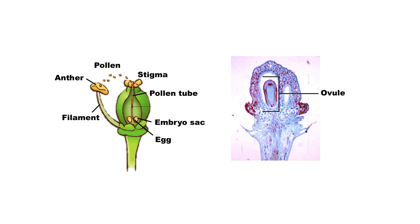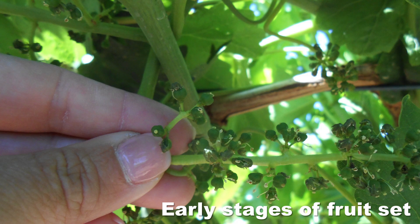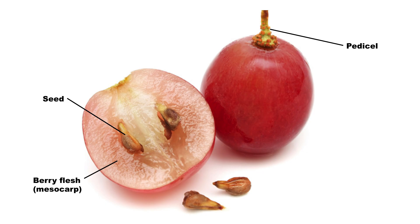During flowering, pollen grains from the anthers adhere to the sticky top of the stigma. Under the right conditions the pollen grains germinate and a pollen tube grows and penetrates the ovule. This egg is fertilised to form an embryo. In seeded varieties, fruit set occurs after successful pollination and fertilisation, and the ovule with its tiny enclosed embryo develops and eventually becomes a hardened seed.